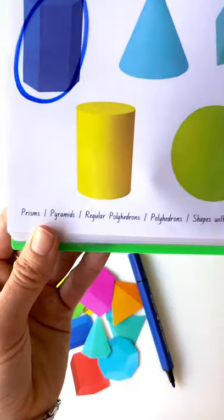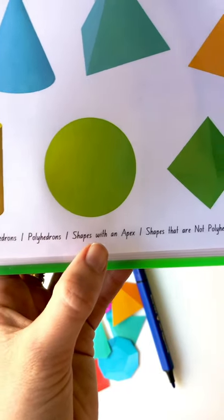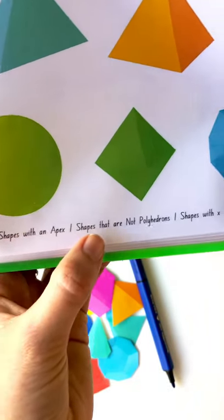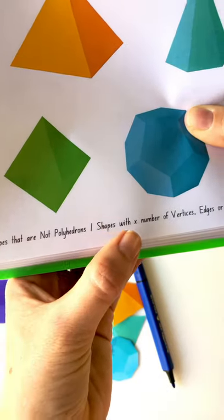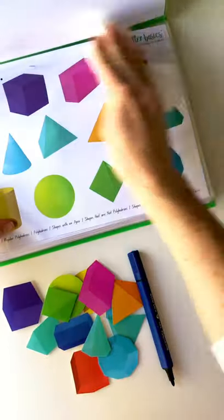So you've got the words down here to group by prisms, pyramids, regular polyhedrons, polyhedrons, shapes with an apex, shapes that are not polyhedrons, shapes with a certain number of vertices, edges, or faces. Oh, let me cover that as well.